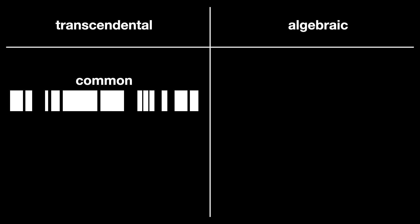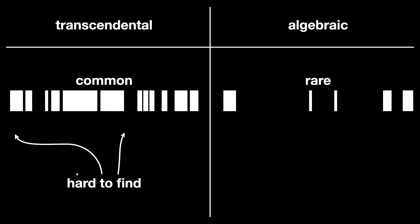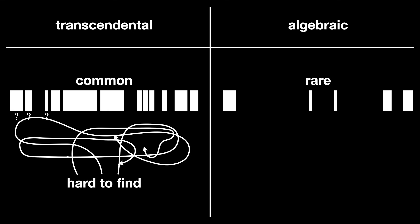What is weird about them is the fact that almost all real and complex numbers are transcendental, but identifying specific transcendental numbers is really hard. There is a sharp contrast between the rarity of algebraic numbers and the huge number of transcendental ones, even though they are so hard to find.